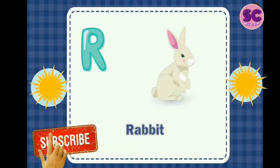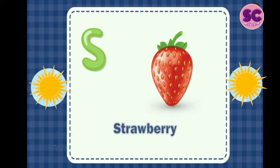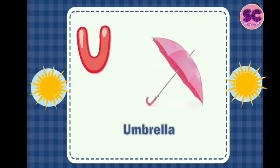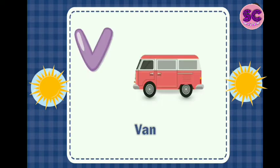R for rabbit, S for strawberry, T for tiger, U for umbrella, V for van.